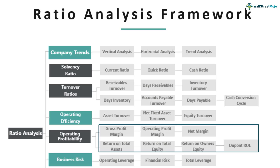An important thing to note is that we also look at return on equity (ROE) and return on total assets — how much return is generated vis-à-vis the total assets deployed in the company. These are all operating profitability measures. In addition, we'll also look at the DuPont ROE, which is a very comprehensive way of understanding how return on equity is generated.